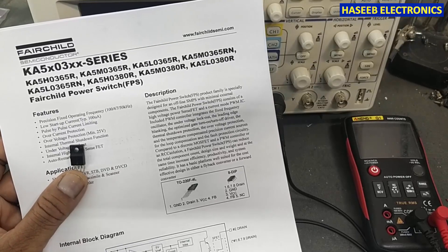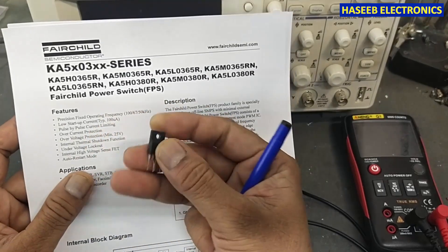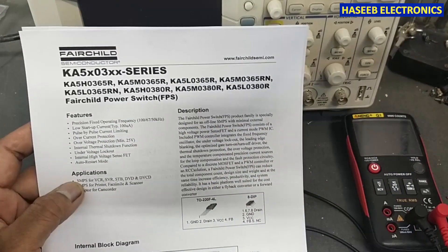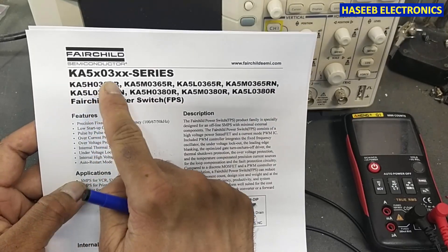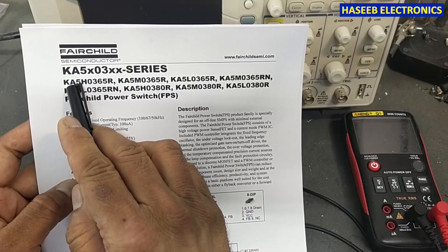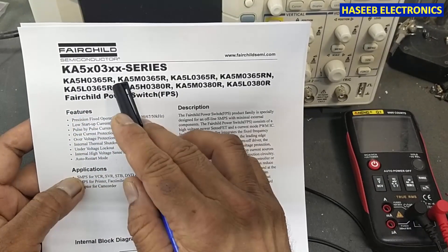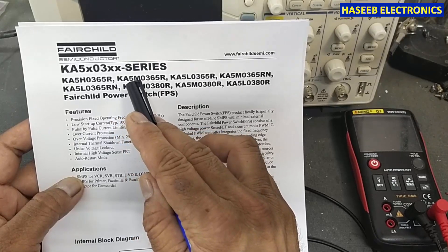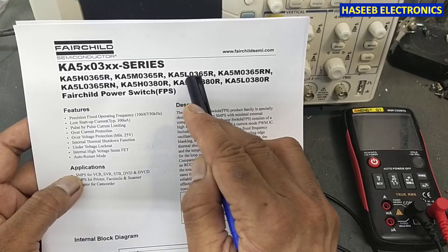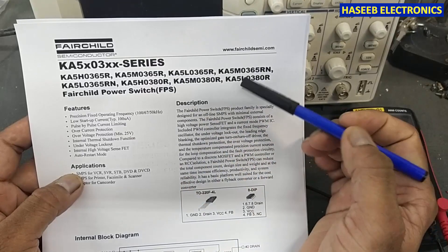Assalamu alaikum warahmatullahi wabarakatuhu friends, welcome back to my channel. In this session we will see a very simple IC. It is a four terminal device, it is KA503 series IC. It has many numbers: KA5H0365, KA5M0365, KA5L0365 HML.